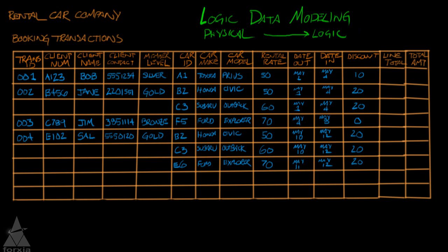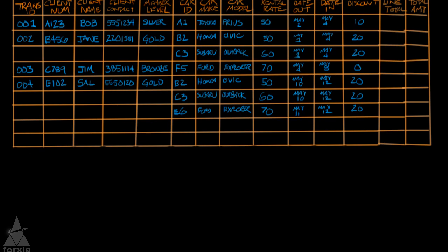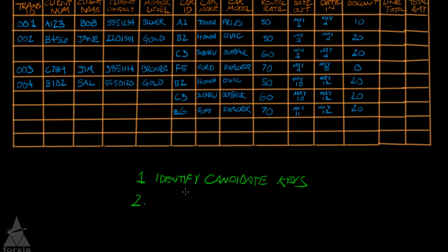To perform this, we need to go through three steps. Step number one: we are going to identify candidate keys. Step two: once we identify the candidate keys, we'll have to select a primary key.